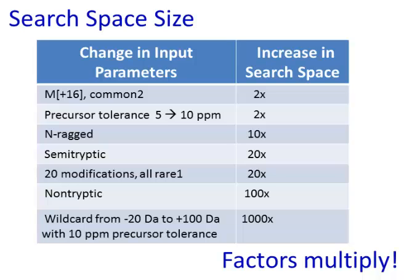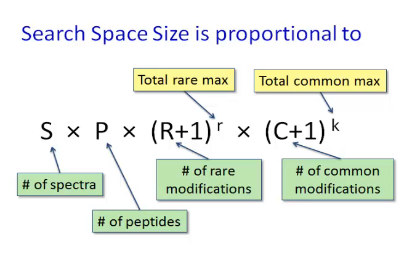Search space size scales according to the equation shown here. It scales linearly with the number of spectra or with the number of peptides. Rare max appears in an exponent — we normally set that to one. The total common max also appears in an exponent, and that's the one we vary; it may be one, two, three, four, or even five. So the total common max is usually the most important single parameter for determining the search space size.